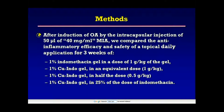For the methods, after induction of osteoarthritis by intra-capsular injection of monosodium iodoacetate, we compared the anti-inflammatory efficacy and safety of topical daily application over three weeks of: 1% indomethacin gel at one gram per kilogram; 1% copper indomethacin gel at one gram per kilogram; 1% copper indomethacin gel at half the dose (0.5 g/kg); and 1% copper indomethacin gel at a quarter of the dose (0.25 g/kg).